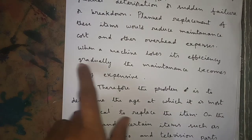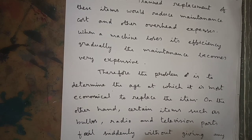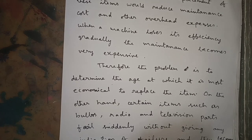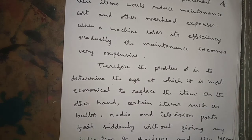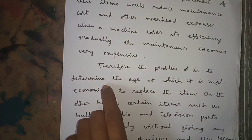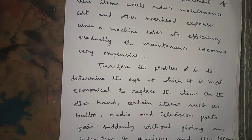As the machine loses its efficiency gradually, the maintenance cost becomes very expensive. Therefore, the problem is to determine the age at which it is most economical to replace the item. That means: what is the right time to replace the product? It may be any item — a machine part, tube light, fan, car, two-wheeler, whatever it may be.